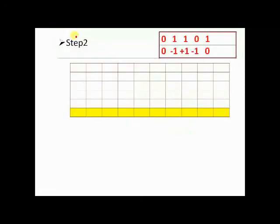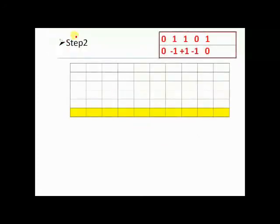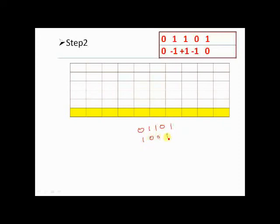With this new multiplier you multiply the multiplicand 0 1 1 0 1. Before multiplying, since there is a -1, you require the 2's complement of the multiplicand. The 1's complement of 0 1 1 0 1 is 1 0 0 1 0; adding 1 gives the 2's complement as 1 0 0 0 1 1.